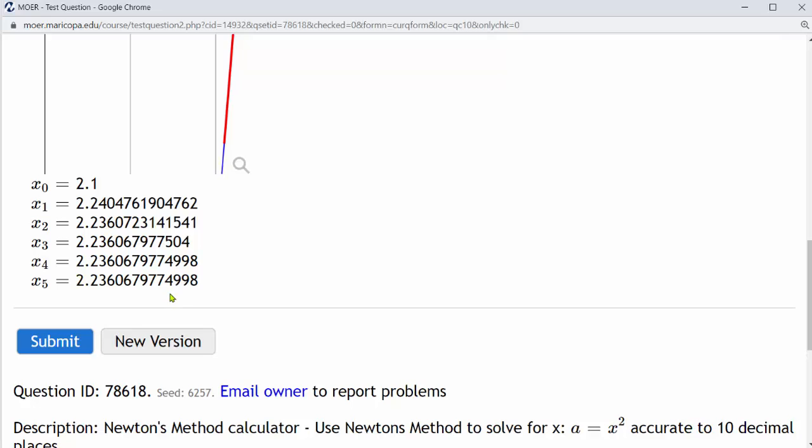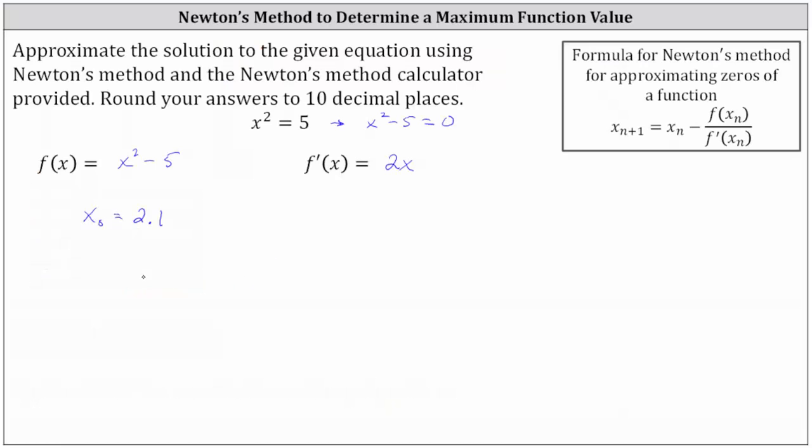Notice the 4 is in the 10th decimal place. Because we have a 9 to the right we round up. The positive approximation is 2.2360679775. Let's go back and record this. So again the positive solution to 10 decimal places is 2.2360679775.